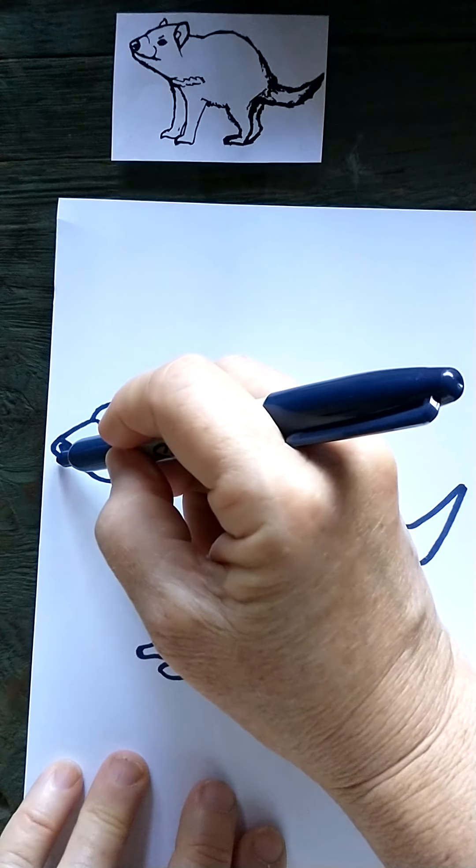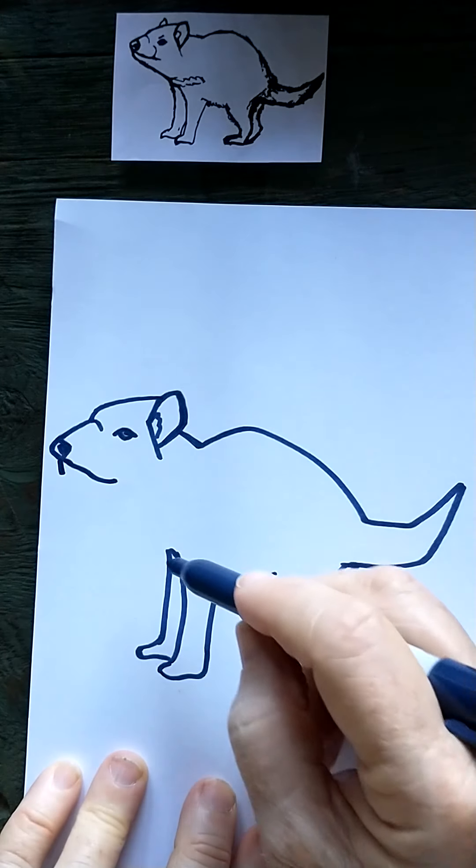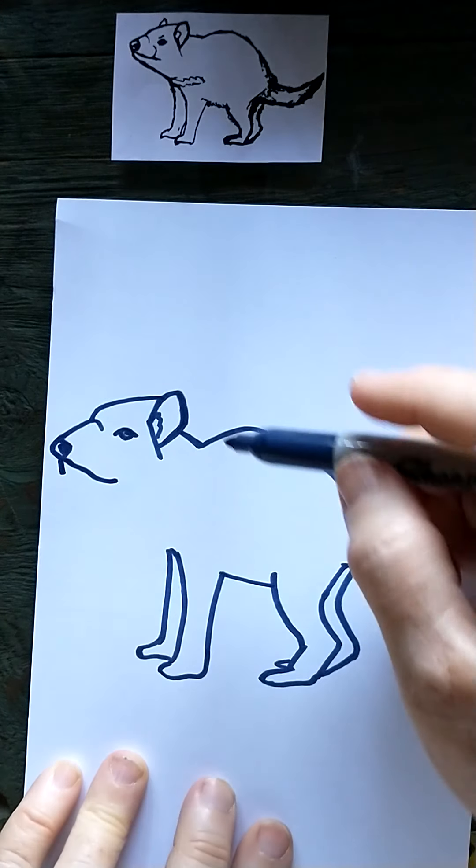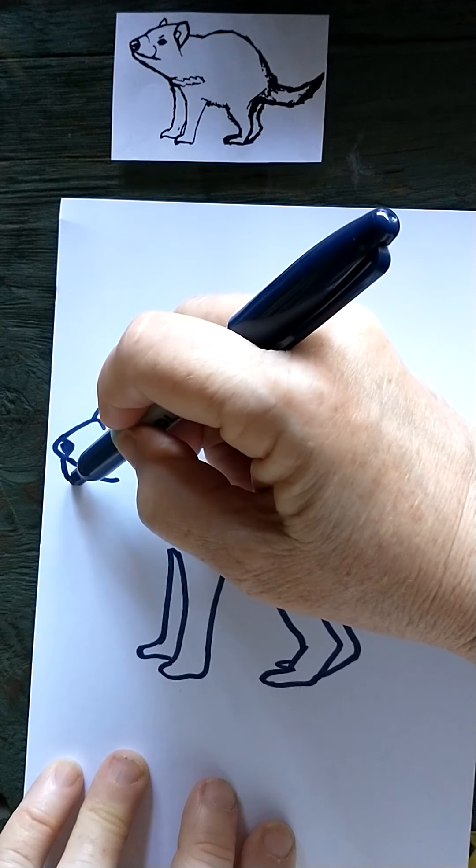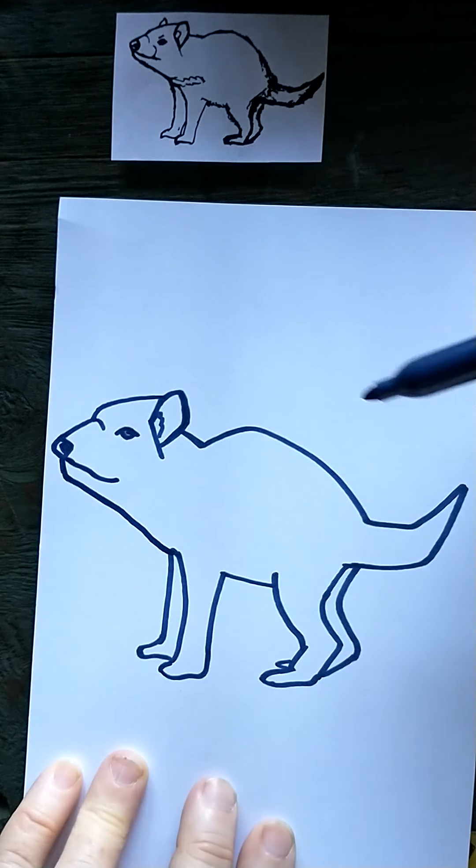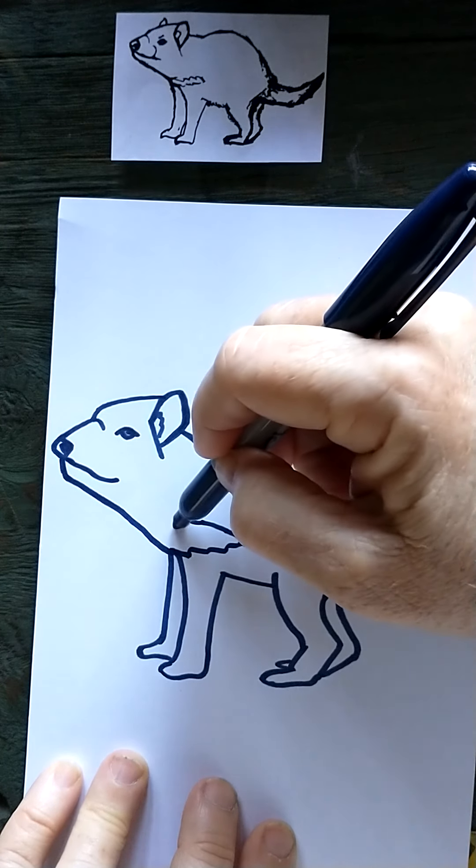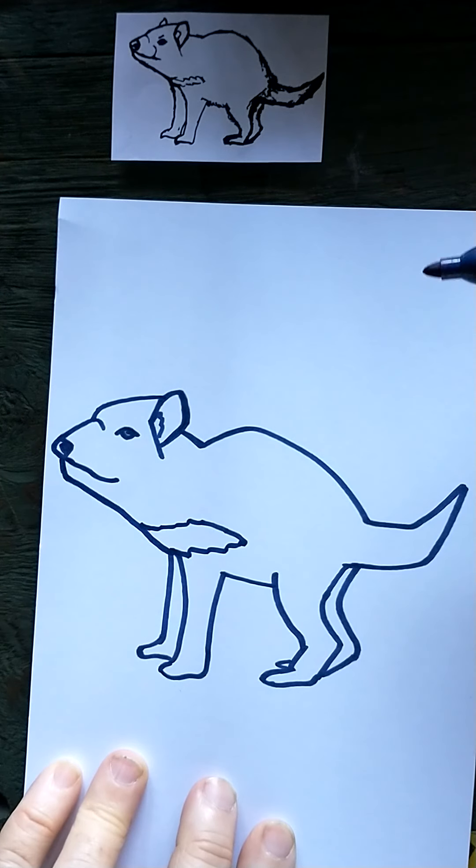The lower jaw comes down a little and then follows that same line and we're meeting our chest. I'm going to come in below the line of the mouth and then I'm coming down. And so this guy's got a little white kind of blaze there.